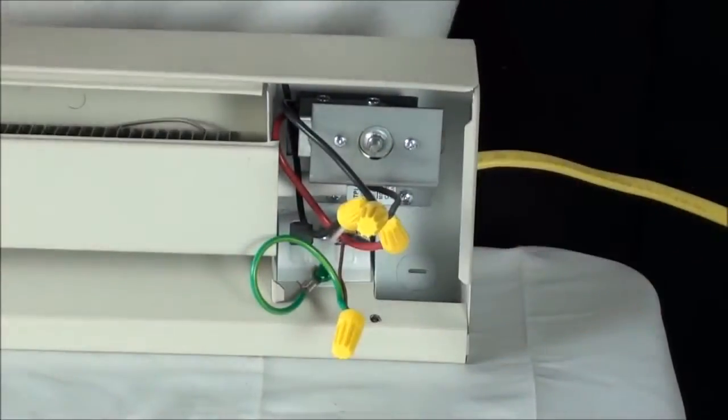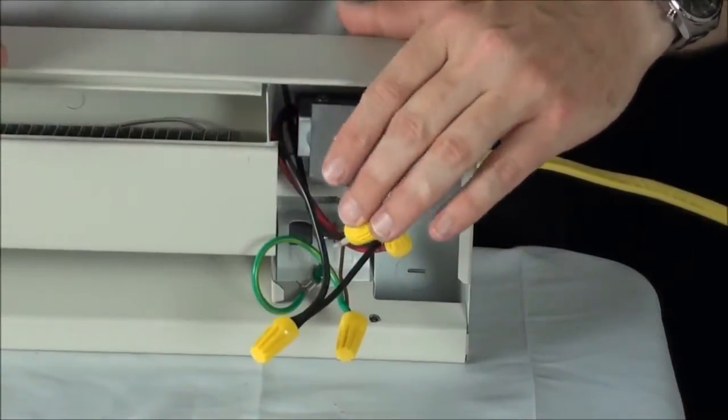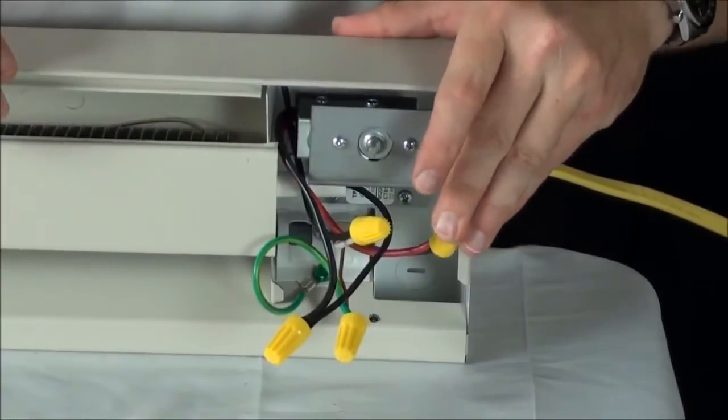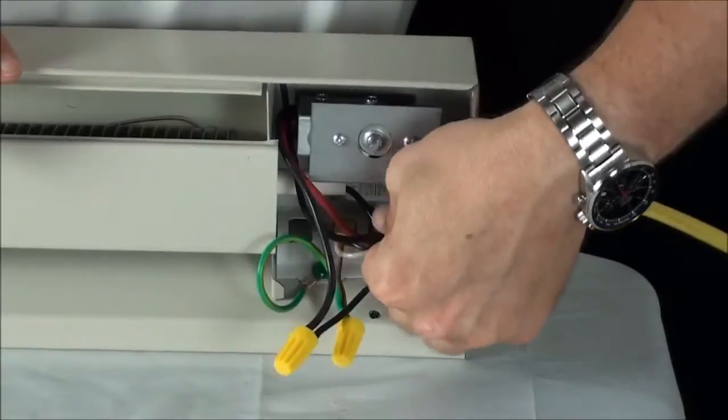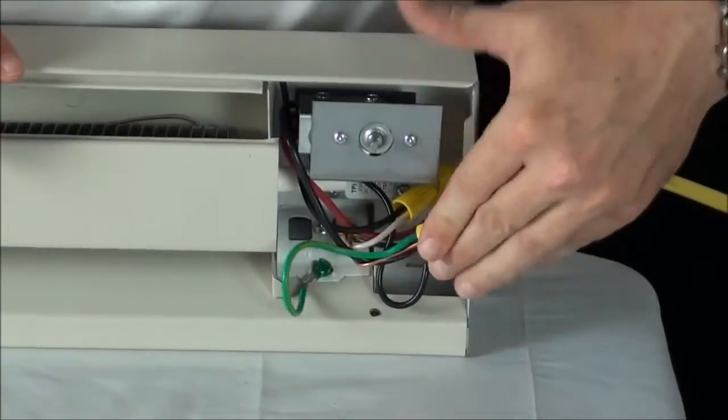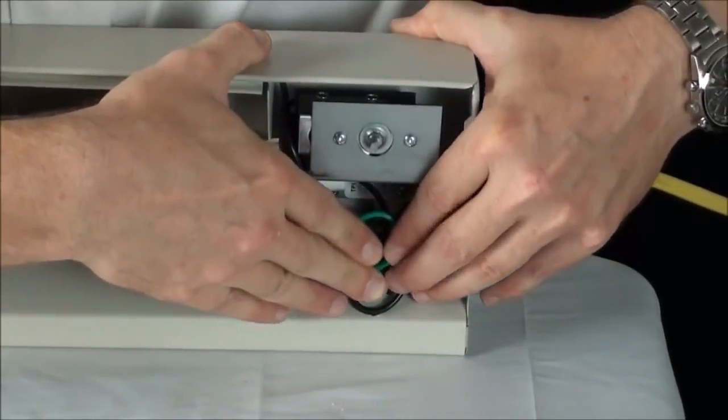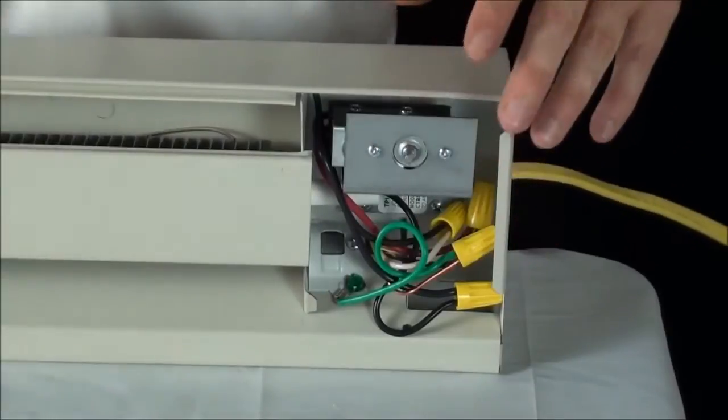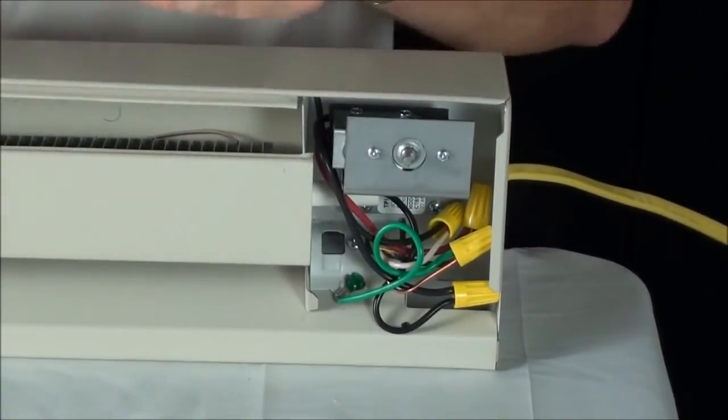Once you've finished with your wiring, you want to turn your power back on to check to see if the baseboard is working properly. After you complete this, turn your power back off, shove your wires inside the junction box, and install one of the two color-coded junction box covers that came with your thermostat.